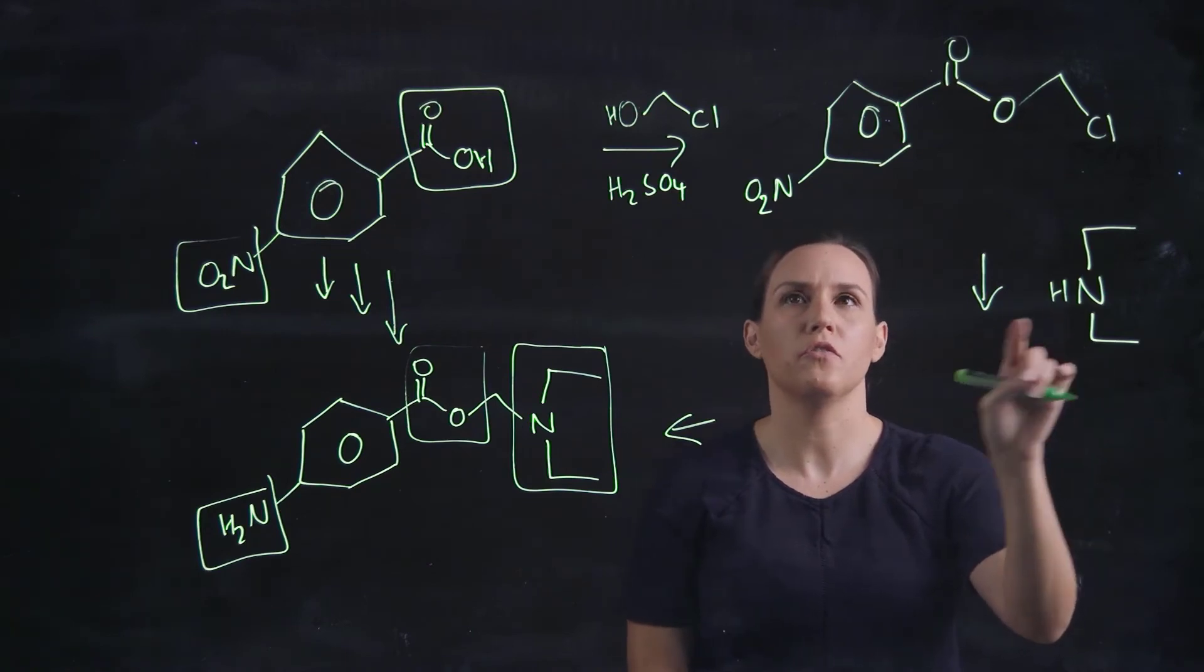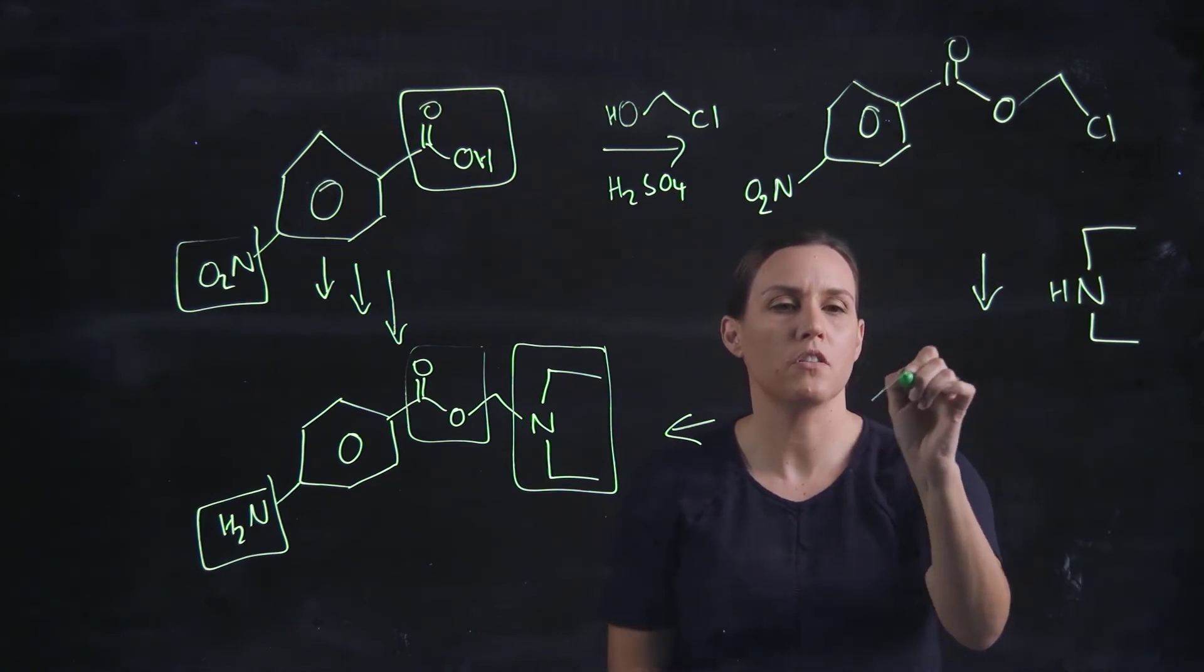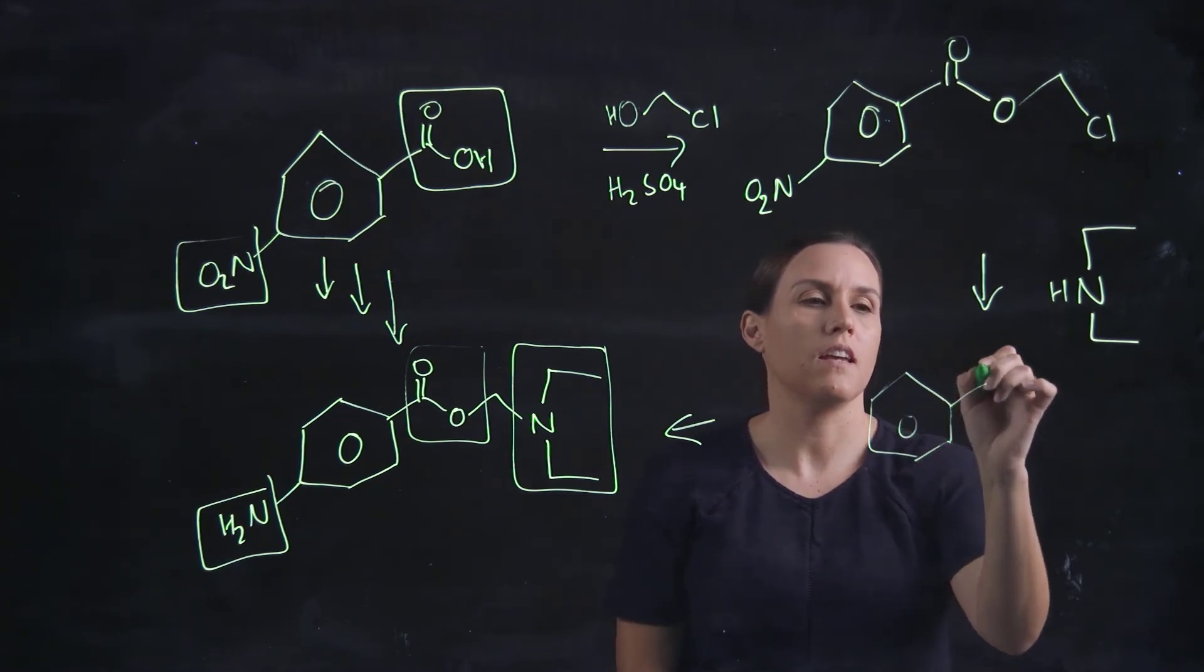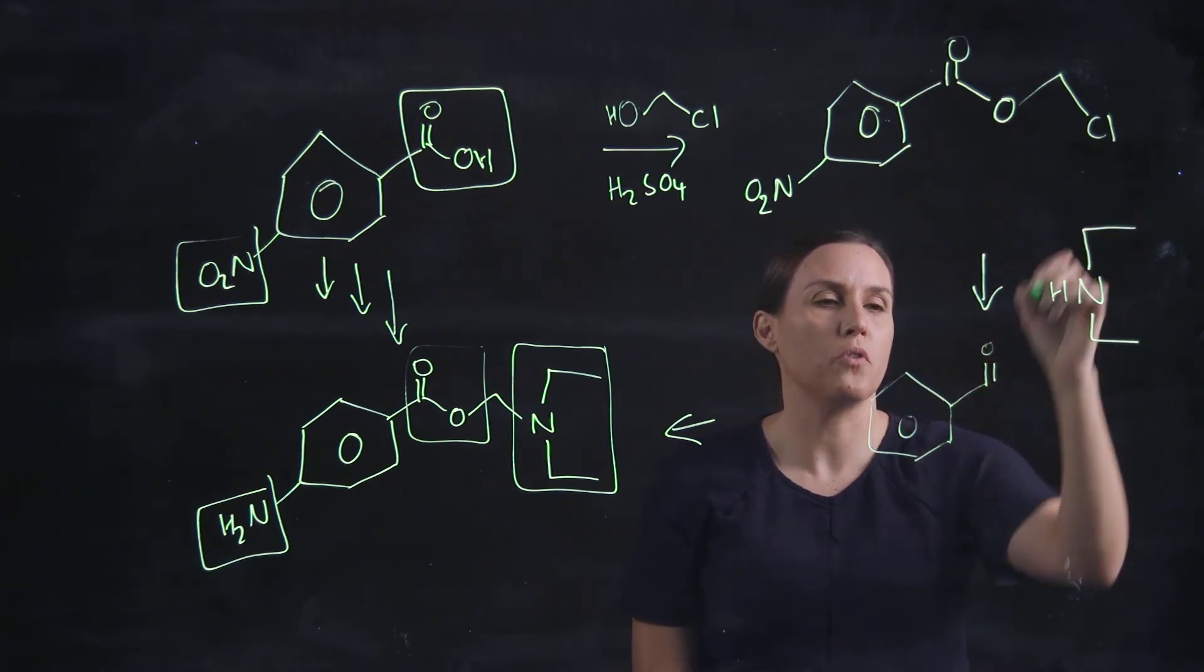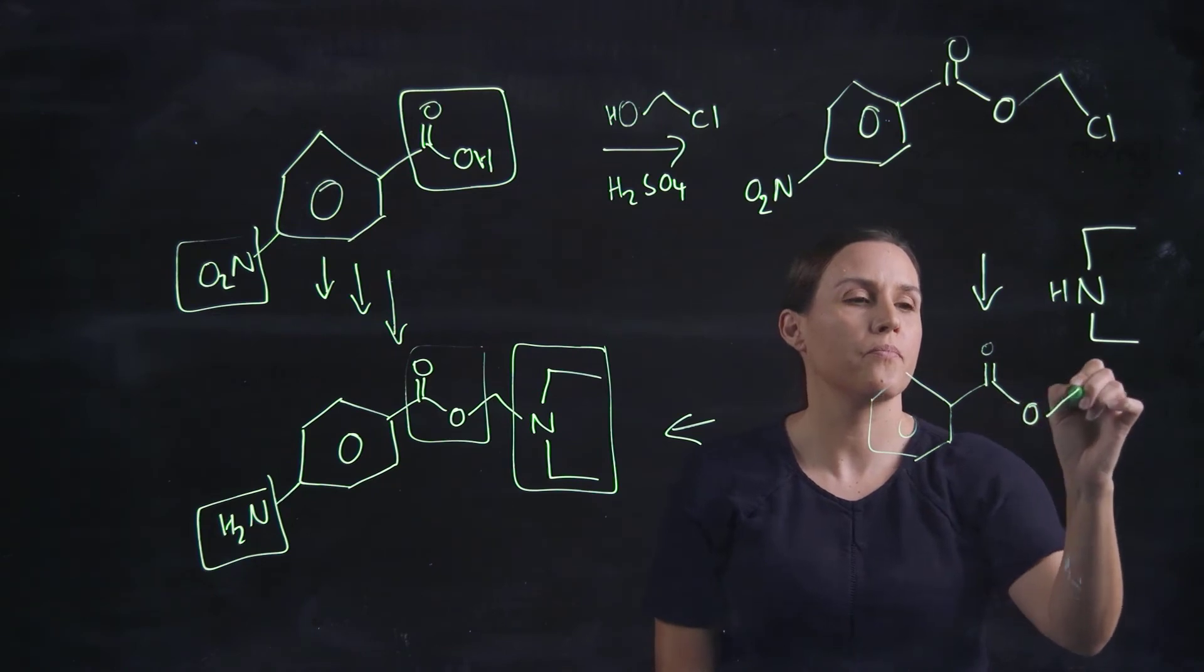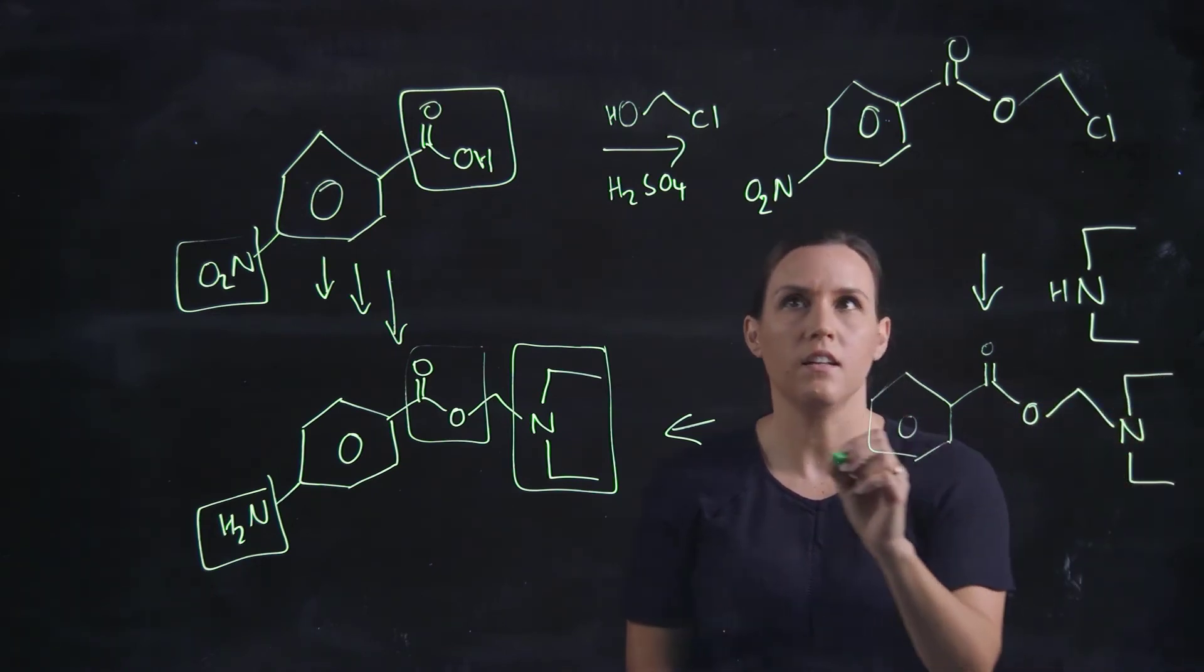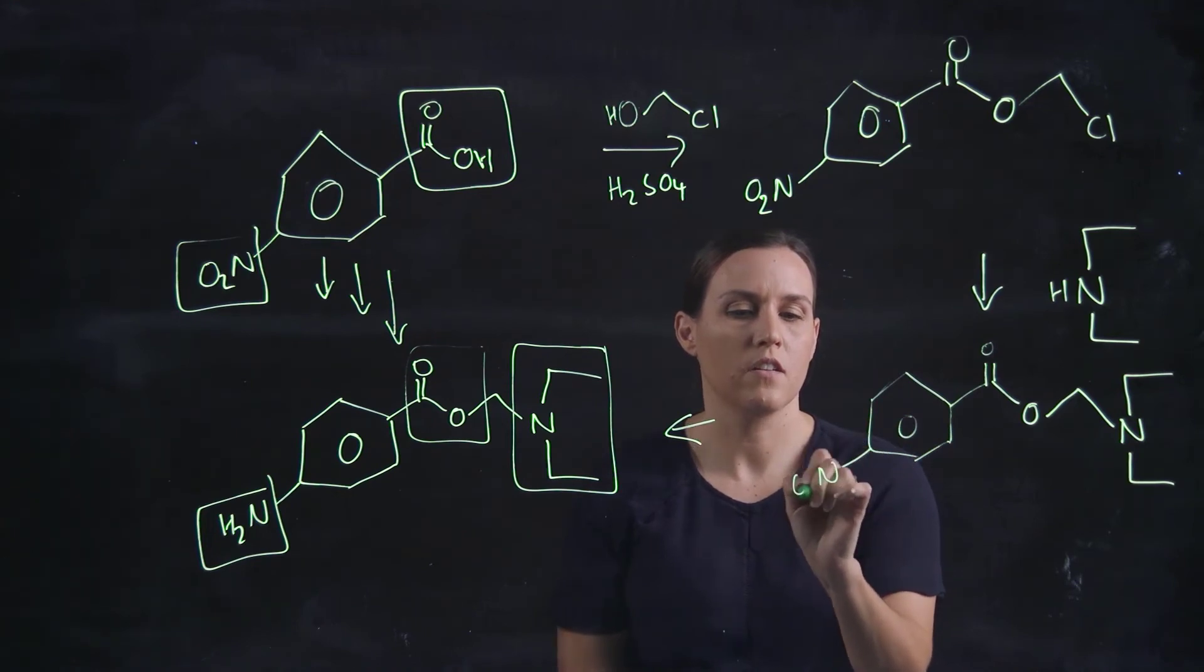And this would also require no additional reagents for that one. That one would go just with the nitrogen. Okay, because that's such a good leaving group that we put in in the step before. And then we would get our nitrogen like that, and we would still have that NO2.